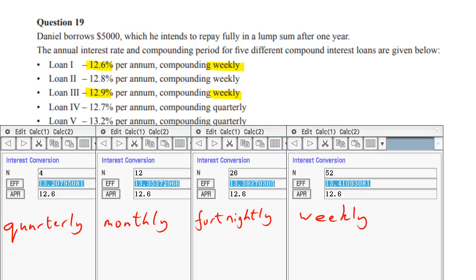But what I wanted to talk about is what if you had the same interest rate? So we've got 12.6 here and we just changed the compounding periods. So we've got four because it's quarterly, 12 because it's monthly, 26 because it's fortnightly and 52 because it's weekly. You can see that by increasing the number of compoundings, you actually increase the effective interest rate.